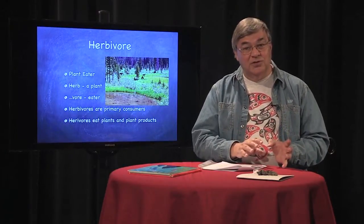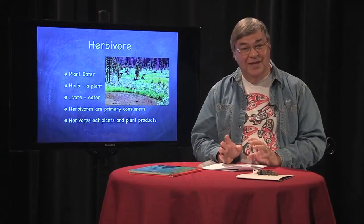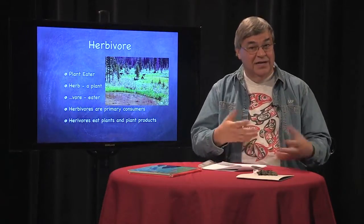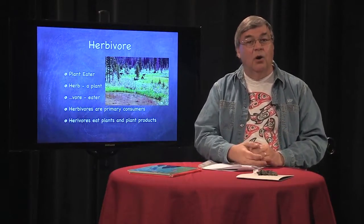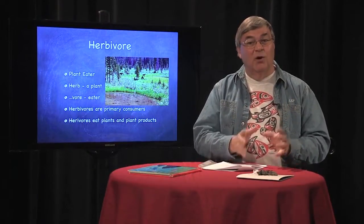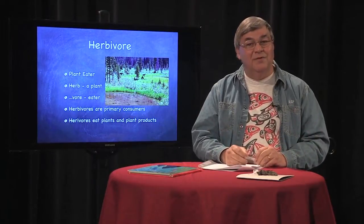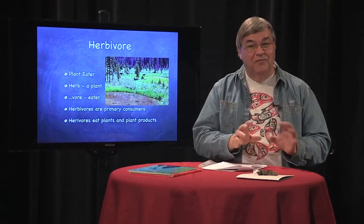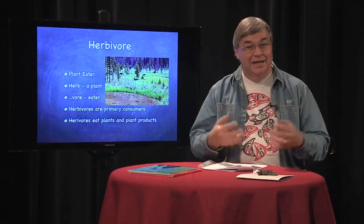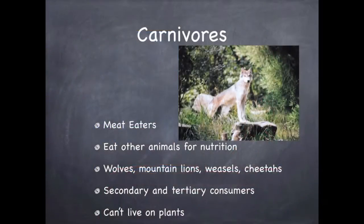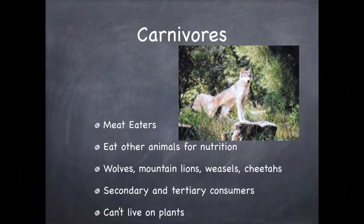Remember the primary consumers — those that eat only plants? Animals that eat plants and their products, like seeds, leaves, and nectar, are called herbivores. If your report were on a deer or a moose, you would note that it's an herbivore. You may be familiar with the word herb — a food derived from plants — and that can help you remember herbivore. What about those secondary and tertiary consumers, those animals that must get their life energy from eating other animals? We have a word for those as well: they're called carnivores, which means meat eaters.